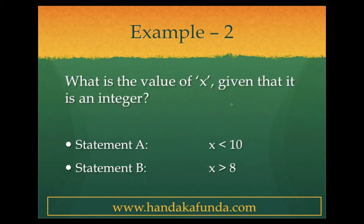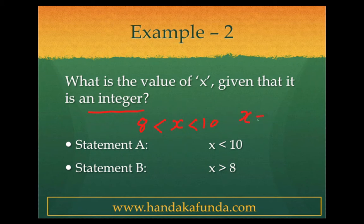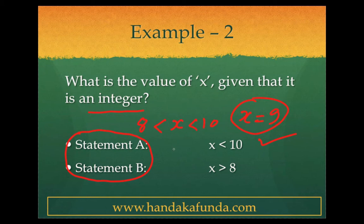Now let's look at a very similar example, but there is some extra information that x is an integer. If x is an integer, what does that tell me? The very same thing — x lies between 8 and 10. Obviously you cannot do it from these statements alone. But now you have x is equal to 9, and now you have the answer because between 8 and 10 there is only one integer, and x is equal to 9 is indeed your answer. So you can combine the two statements given and figure out what the answer is.